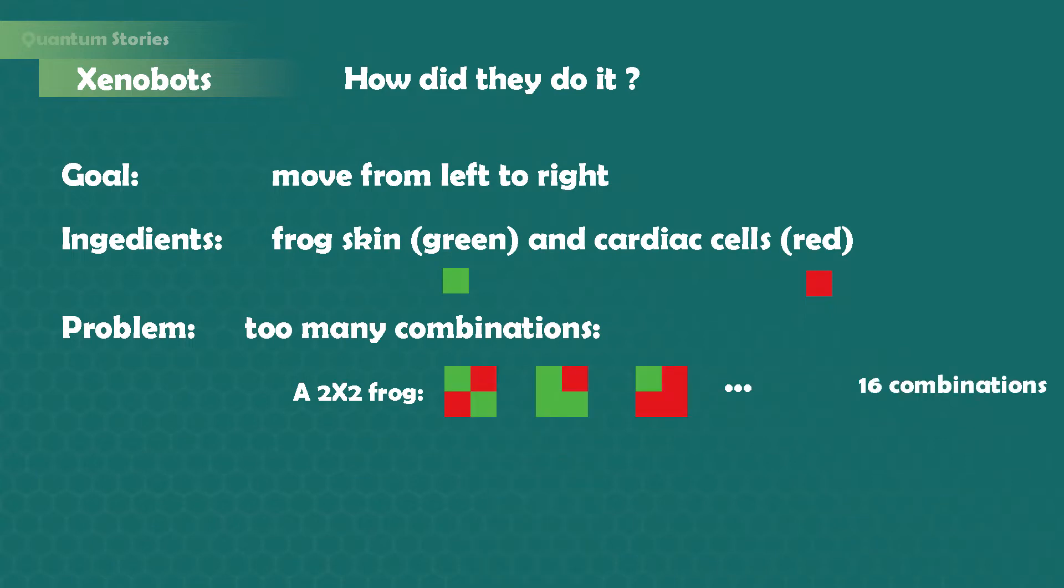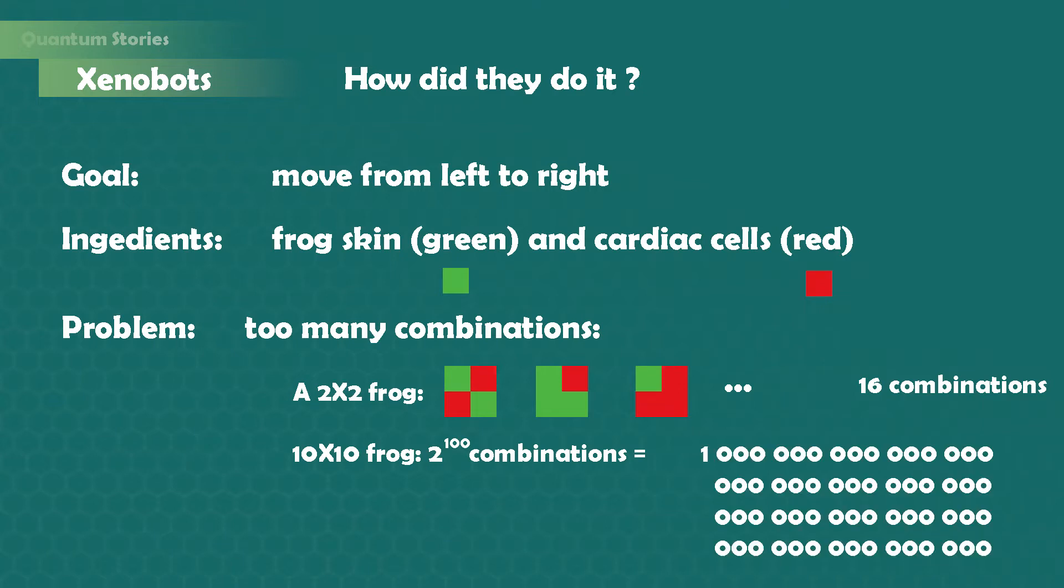Let's scale this up now with a 10 by 10 cell robot. So if we do the math, we have 100 cells. For each of these cells, we have two possible cell types, which means we have 2 to the power of 100 possible combinations. This is a huge number. It's just way too much to test each of them and to see which ones go from left to right. We need to find a smarter approach.